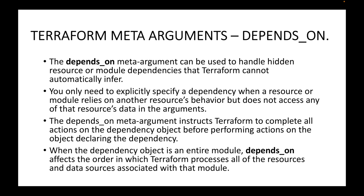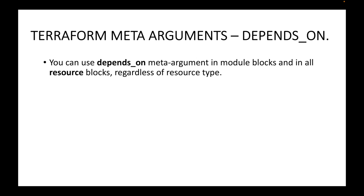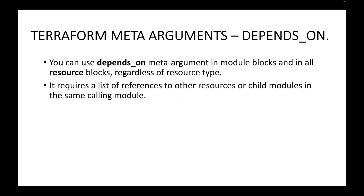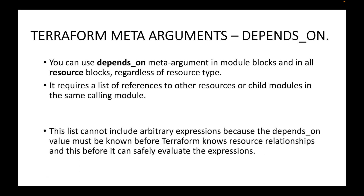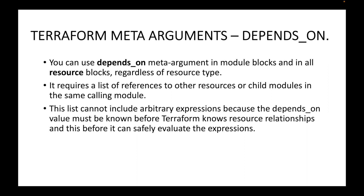When the dependency object is an entire module, depends_on affects the order in which Terraform processes all of the resources and data sources associated with that module. You can use the depends_on meta argument either in the module block or in the resource block, for any resource type. It requires a list of references to other resources or child modules in the same calling module.